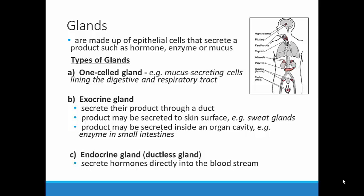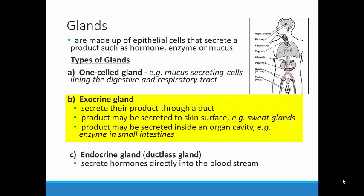The major role of glands in the body is to secrete a product. Secrete is just a scientific word for produce and release into the body. Depending on the type and location, glands might produce a hormone, enzyme, or mucus. There are three types of glands. First, there are one-celled glands — simple structures that are literally only one cell. An example would be the cells that produce mucus along the digestive and respiratory systems. The second type is called an exocrine gland, which secretes its product through a duct or a small tube that directs the product to a specific place. We'll see this occur in the digestive system later in this unit.